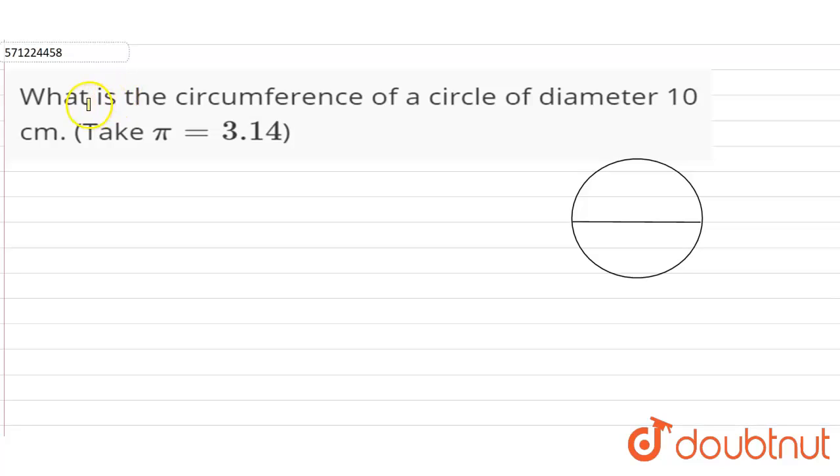Hi students, the question is what is the circumference of a circle of diameter 10 cm? Take pi is equal to 3.14.